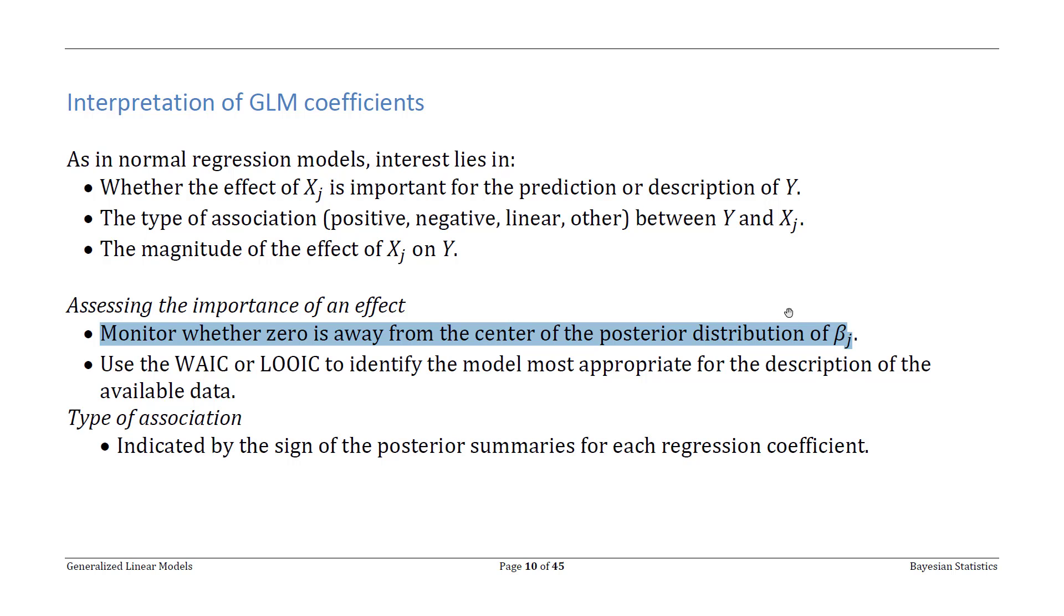On a broader level, we can use something like the widely applicable information criterion or the leave-one-out information criteria, which we've talked about before, but essentially these are different information criteria that you can use to decide which model best fits the data from a set of candidate models.